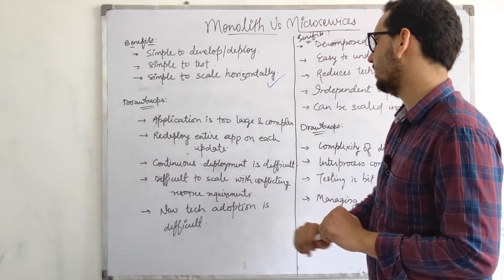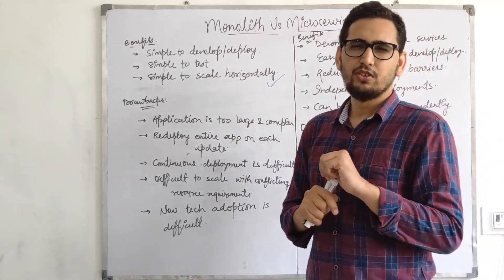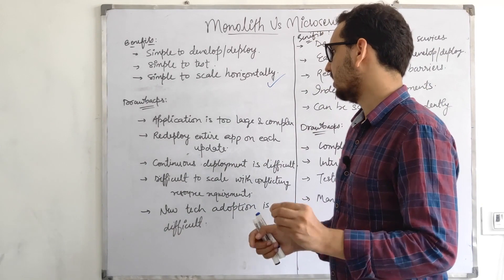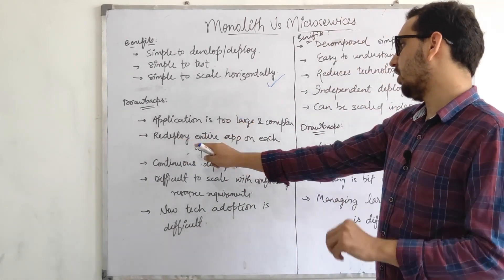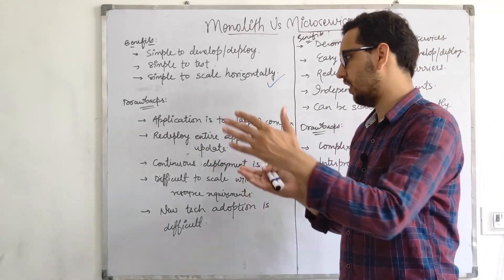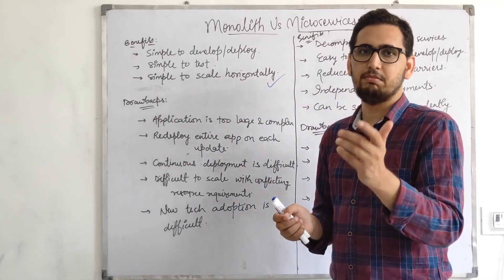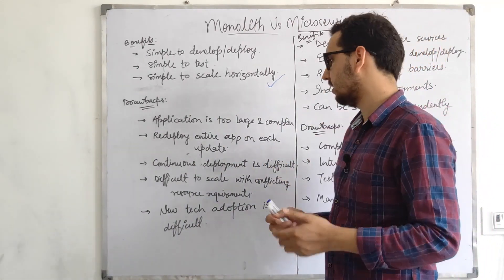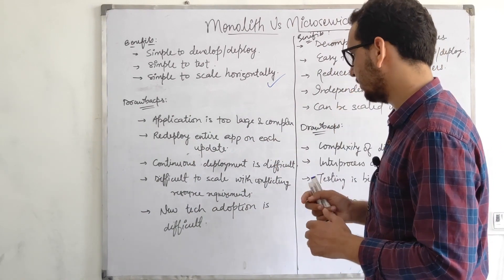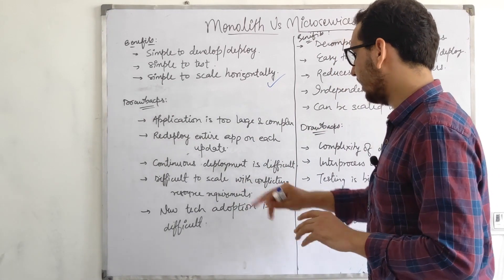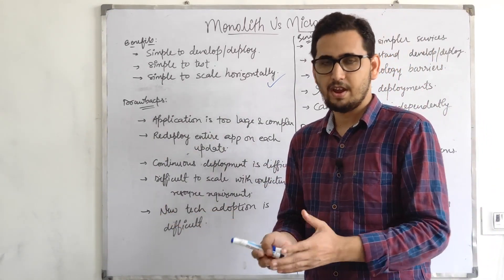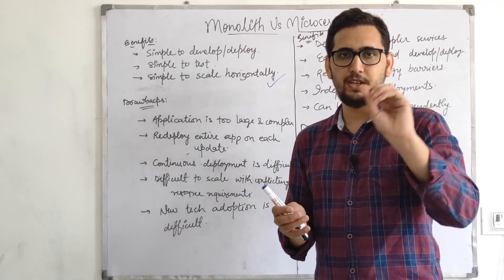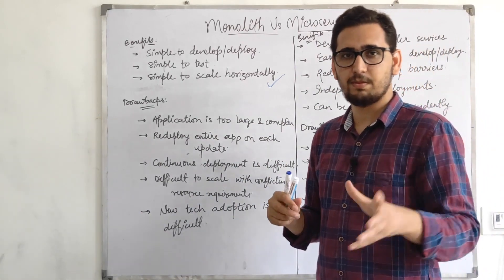The drawbacks of monolith: the application can become too large and complex to understand. A new team member would have to understand the entire codebase just to make a simple change. You also have to redeploy the entire application on each update — even changing an error message requires a full redeployment. And you don't know what else might break. Continuous deployment is also difficult because multiple people work on the same codebase, making integration and testing harder.